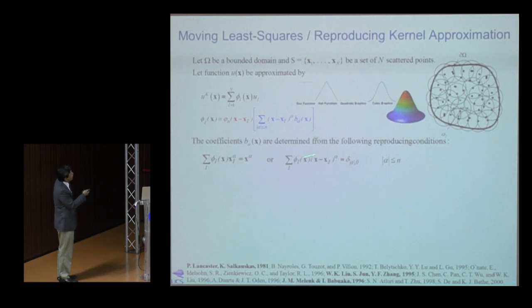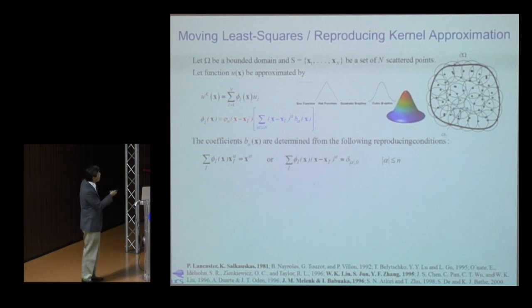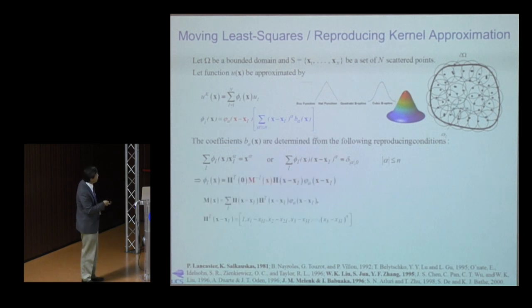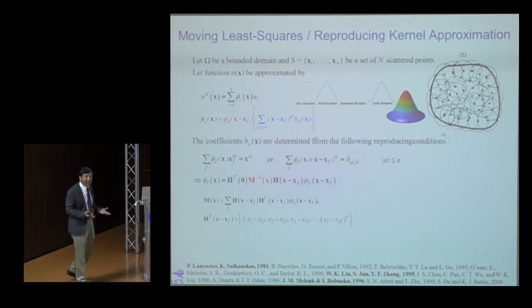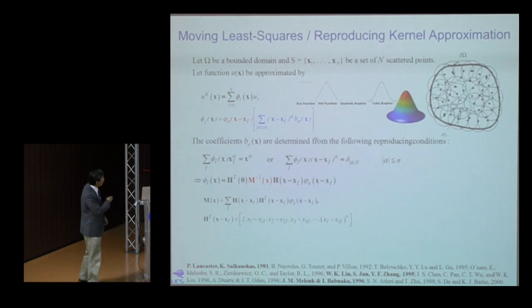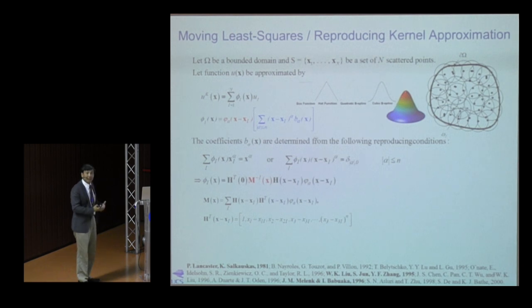Unfortunately, you must satisfy completeness at every position x, y, z, giving a set of linear equations. The coefficients b are solved by a local linear system, and bringing it back yields an inverse of a matrix — a function of x, y, z, not just a constant matrix. This is a core issue arising from enforcing completeness.